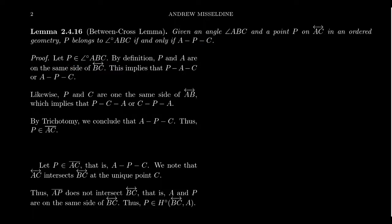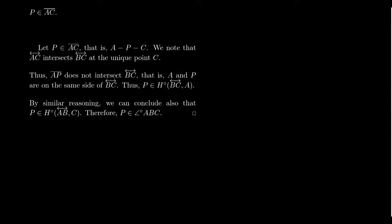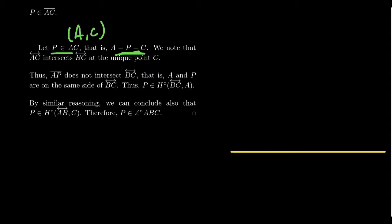Now going the other direction for the Betweenness Lemma: assume that P is in the open interval from A to C, meaning P is between A and C, so P is neither A nor C. We need to prove that P is in the open angle associated to points A, B, C. Consider our three points — we have line BA drawn here and line BC like so.